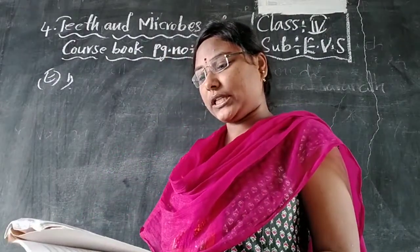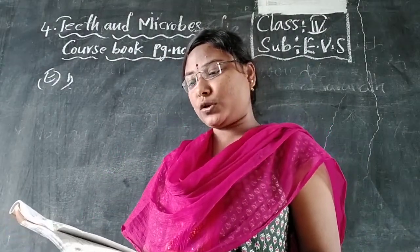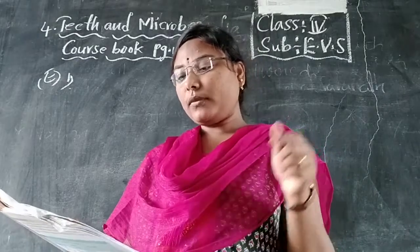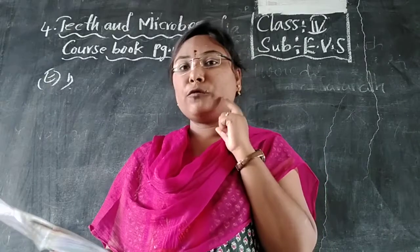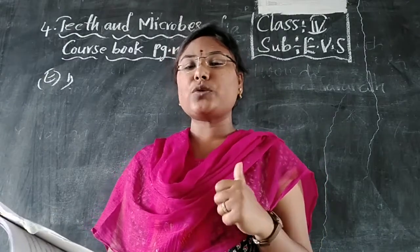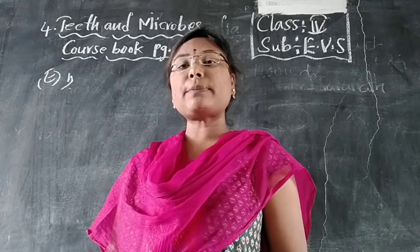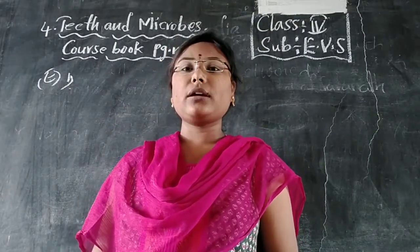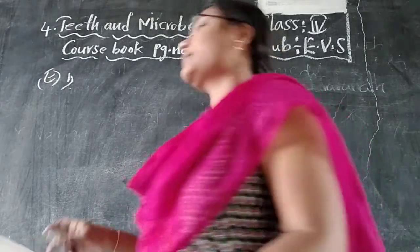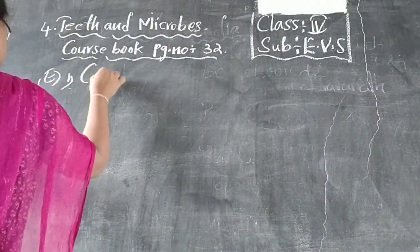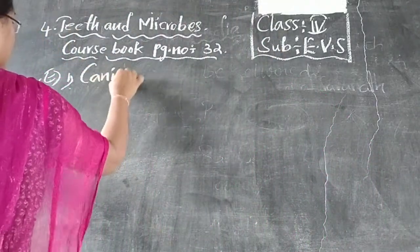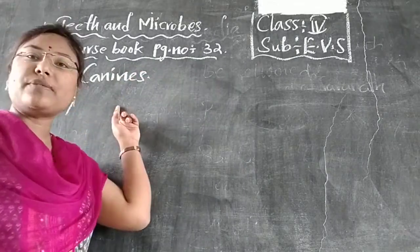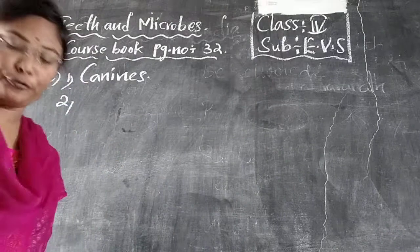First question: teeth which is used to bite our food. Which type of teeth are we using to bite our food? The answer is canines. Canines — C-A-N-I-N-E-S. Canines are used for biting the food.